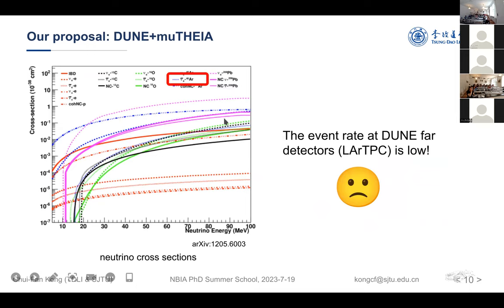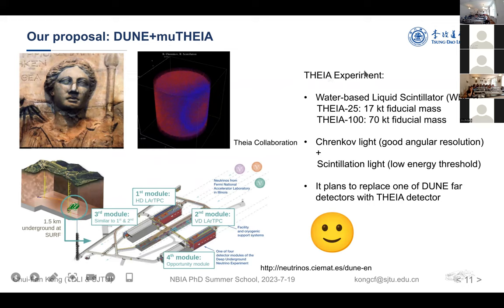To detect such low energy neutrinos, you know, DUNE experiment is just a liquid argon time projection chamber and the cross section between the electron anti-neutrino and the argon is quite small compared with the inverse beta decay. The event rate can be very low at DUNE's far detectors. But fortunately, there's another experimental proposal called THEIA. THEIA wants to use a water-based liquid scintillator to substitute one of the DUNE far detectors. If we have the THEIA detector, it can significantly enhance the event rates, and this is what we want.